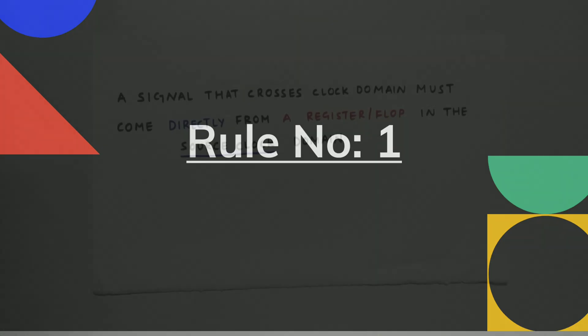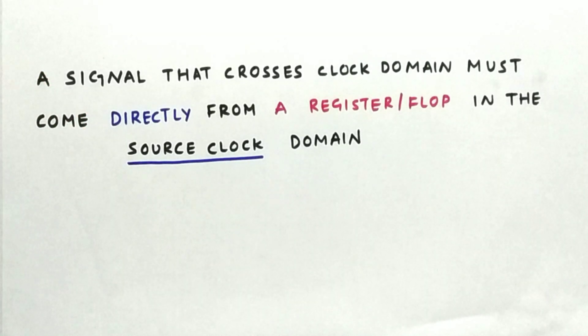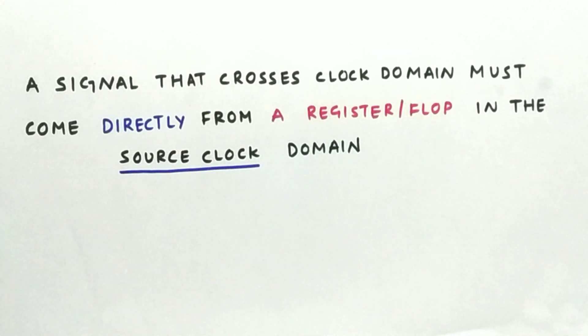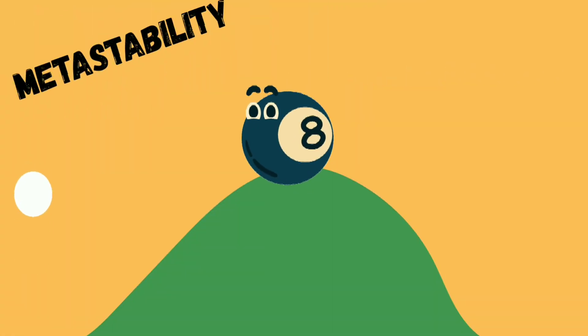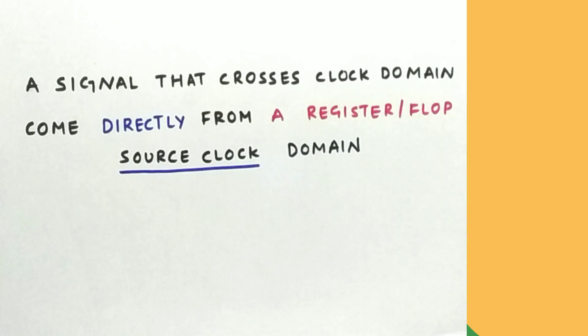So rule number one is a signal that crosses clock domain must come directly from a flop in the source clock domain. If a signal comes out of a combinational logic, there is a high chance of getting a glitch which might result in metastable condition. So this is a must-follow rule that a signal which is crossing clock domains must be registered.